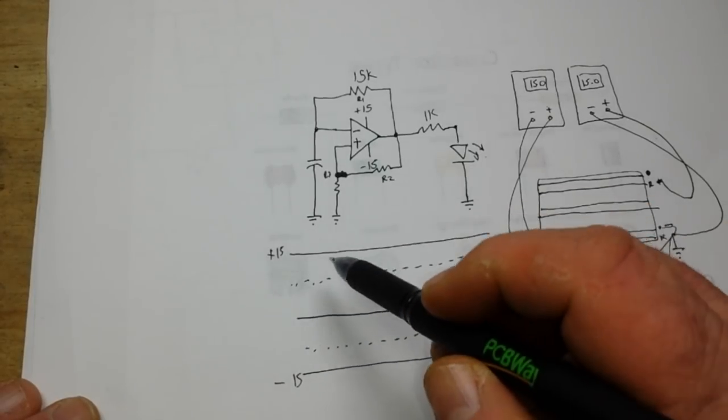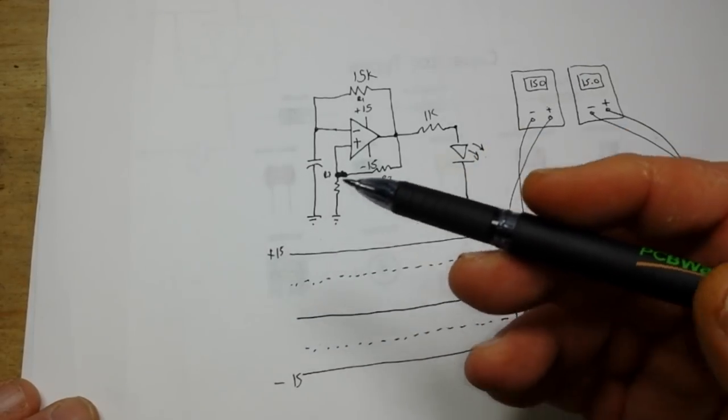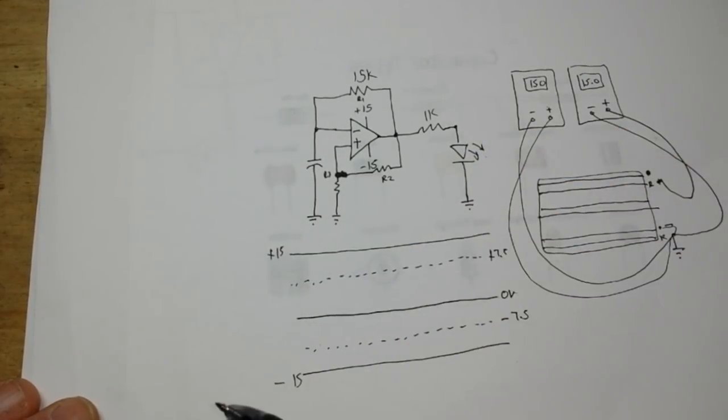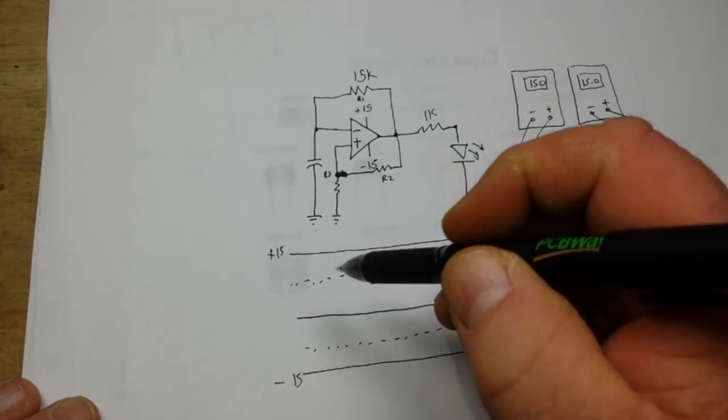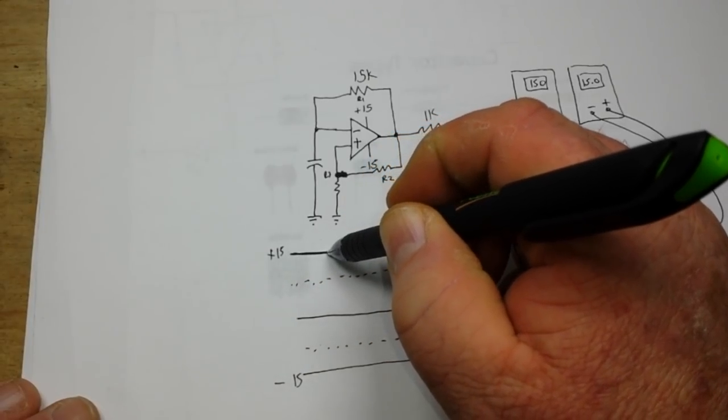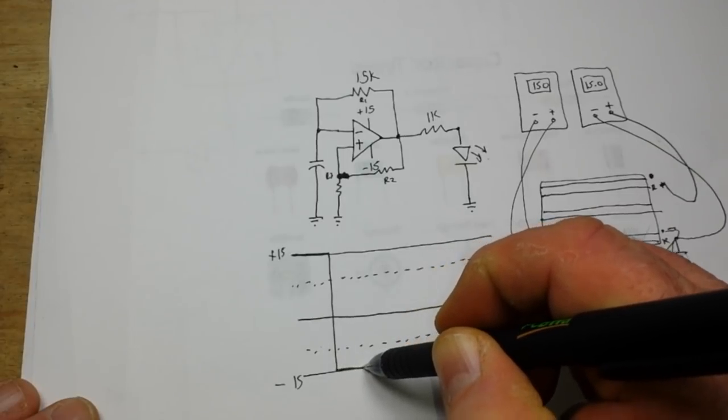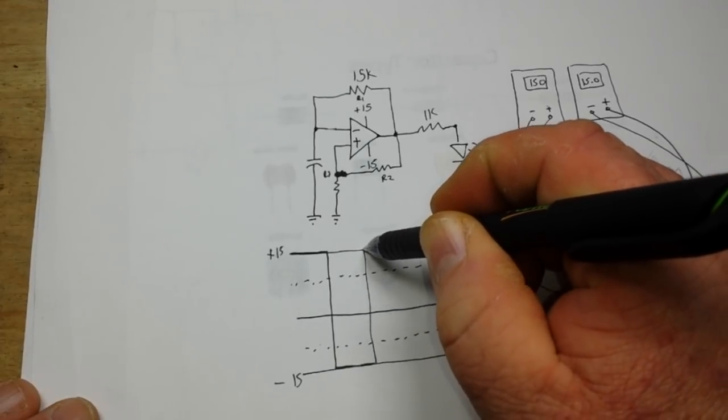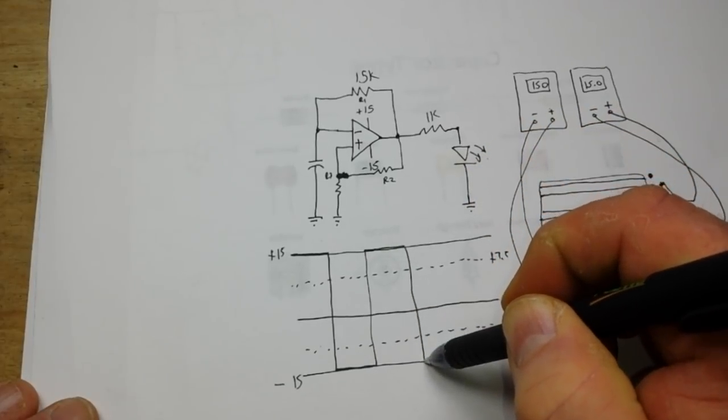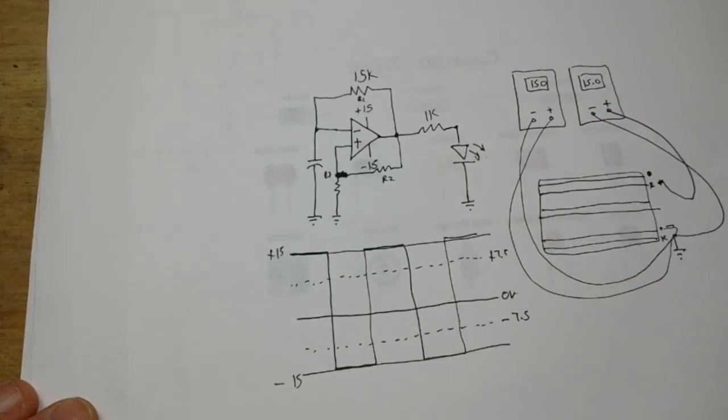So basically, as the op amp swings through this voltage, you got a 50-50 shot if it's going to go positive or negative first, doesn't really matter, but it could go either way. So let's say it starts out positive. So it's going to go fully positive for a time, then it's going to discharge or it's going to swap to fully negative for a time, fully positive for a time, you get the idea, just like this, ad infinitum.